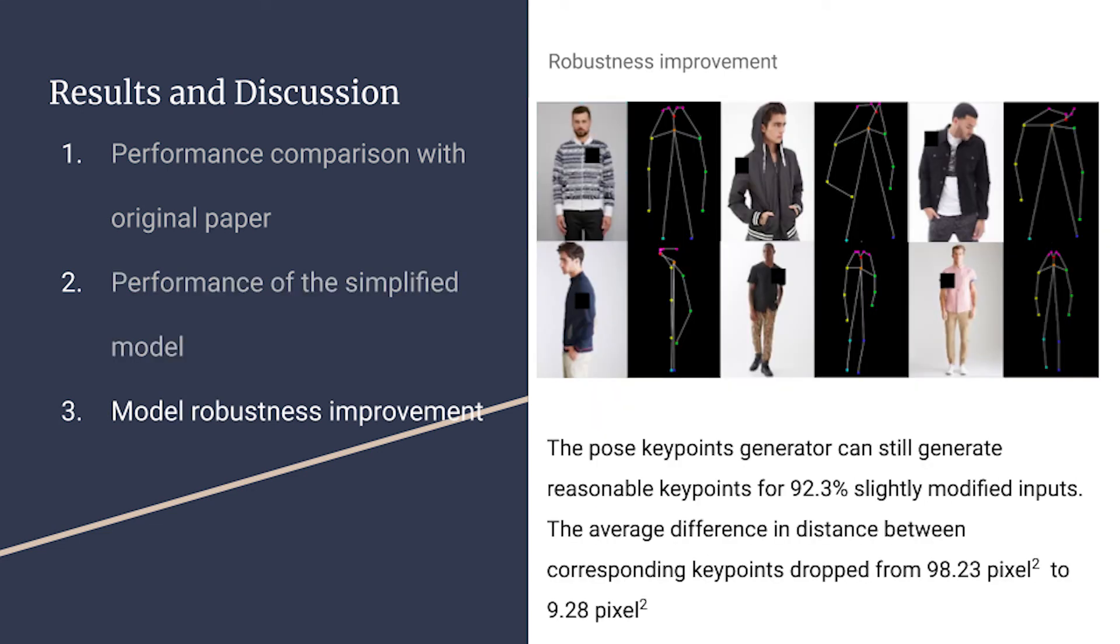To increase the model robustness, we add some random black masks to the image and keep training with them. We see that after training, it can still give reasonable keypoints for about 90% of the modified input.